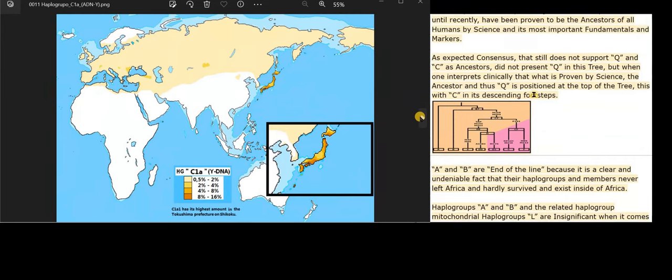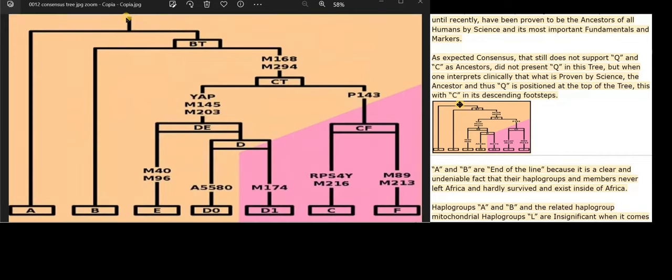As expected, consensus that still does not support Q and C as ancestors did not present Q in this tree. But when one interprets clinically that what is proven by science, the ancestor and thus Q is positioned at the top of the tree. This would be seen in its descending footsteps.